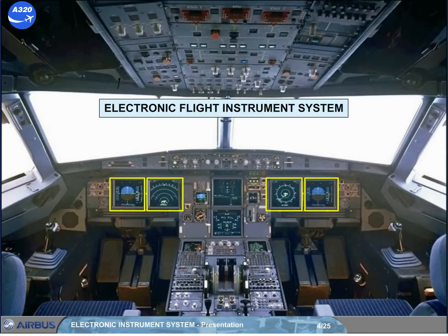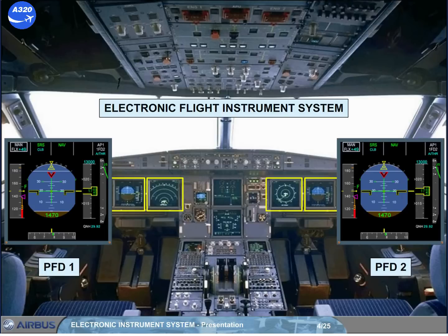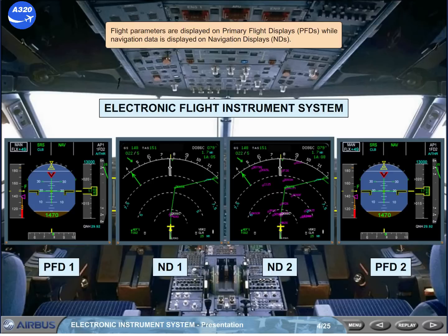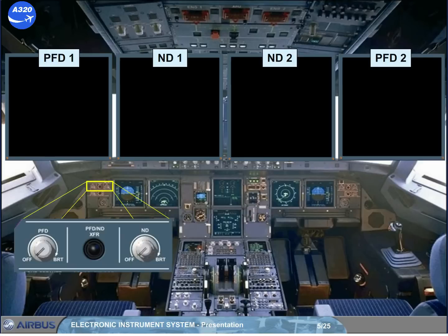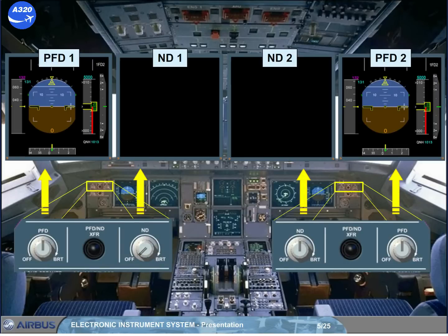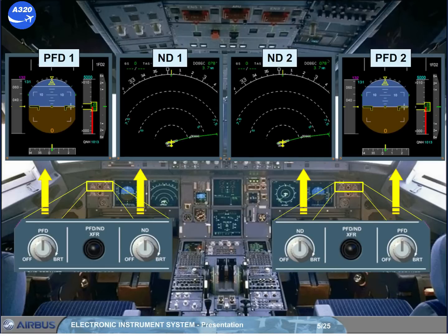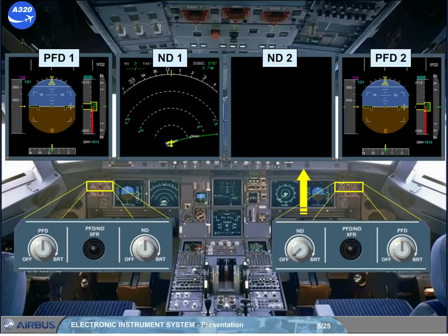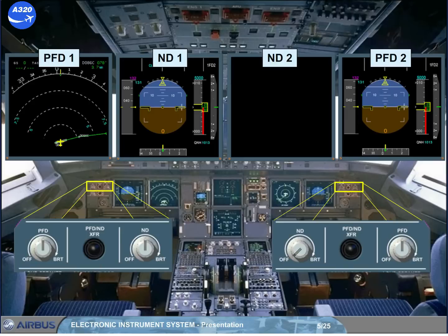Flight parameters are displayed on primary flight displays, while navigation data is displayed on navigation displays. Outboard of the PFD, there are control knobs to adjust the brightness of the related PFD and ND, or to turn the display off. There are also switches to swap displays between the PFD and the ND.